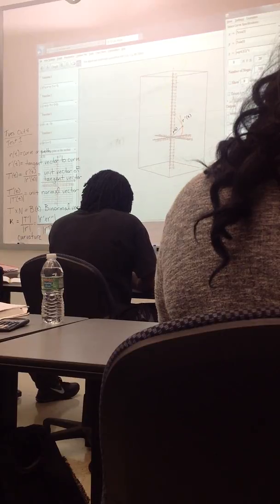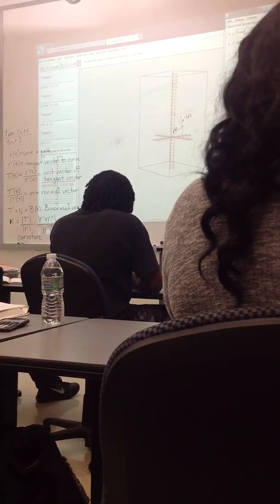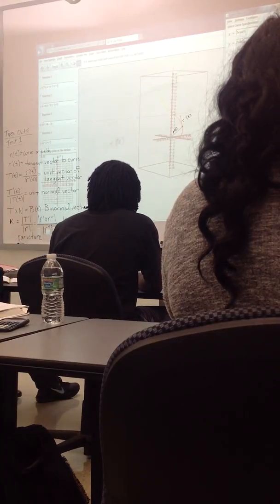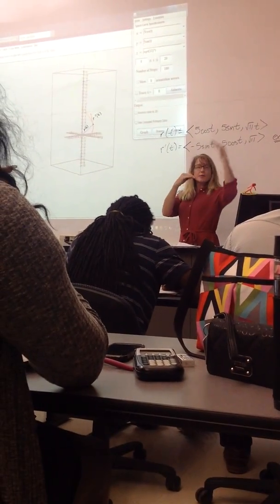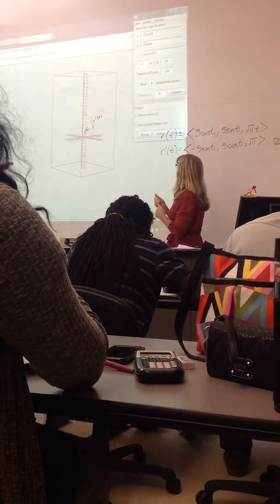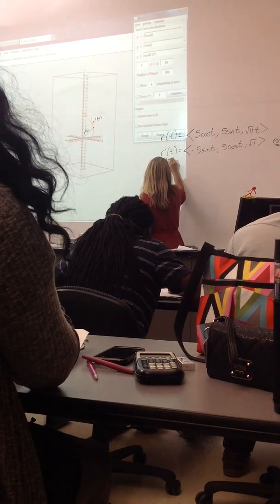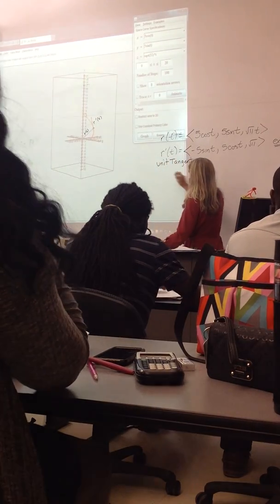Now, as I mentioned, a lot of times in physics applications, you might be interested in the direction of the tangent, but not necessarily the exact tangent vector. Hence, you might want the unit tangent vector, the tangent vector turned into a vector of length 1.